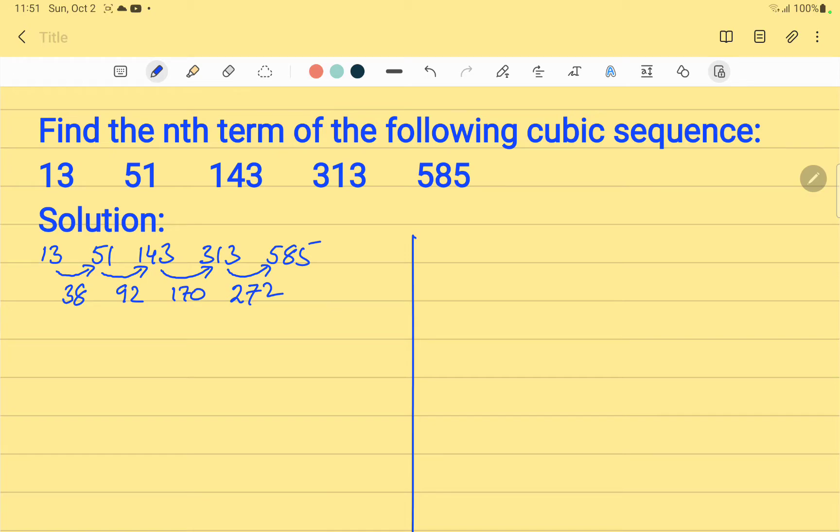We can see that these differences are not the same. So we will repeat the same step and find the differences again. We subtract 38 from 92, the answer is 54. Then we subtract 92 from 170, the answer is 78. Then we subtract 170 from 272 and the answer is 102.